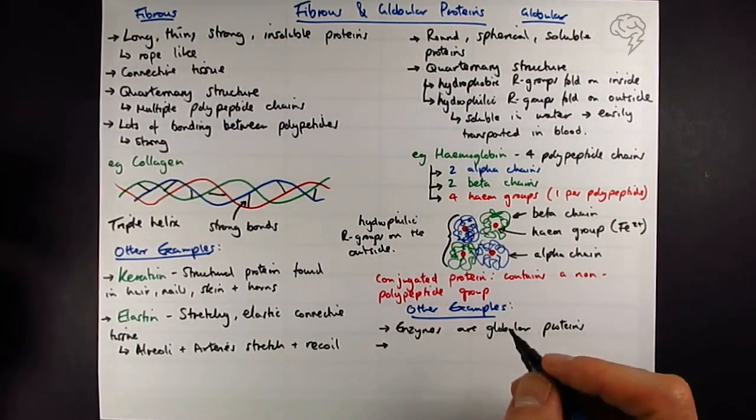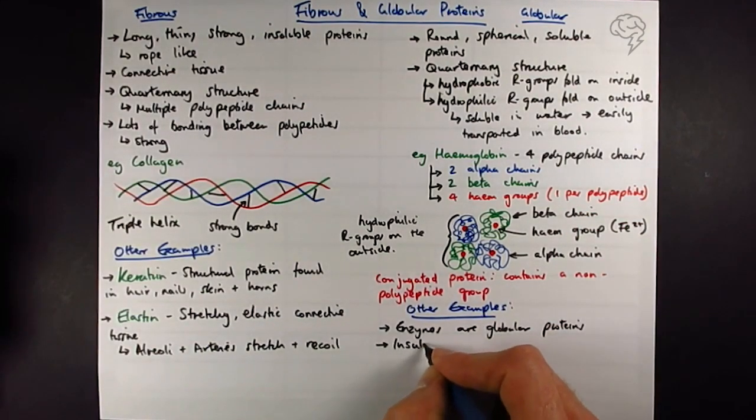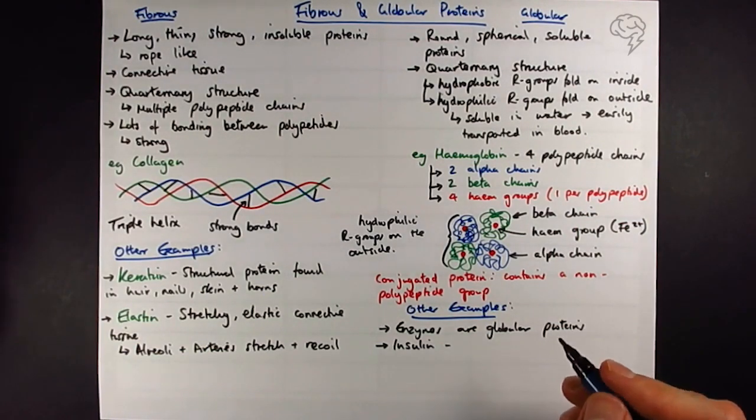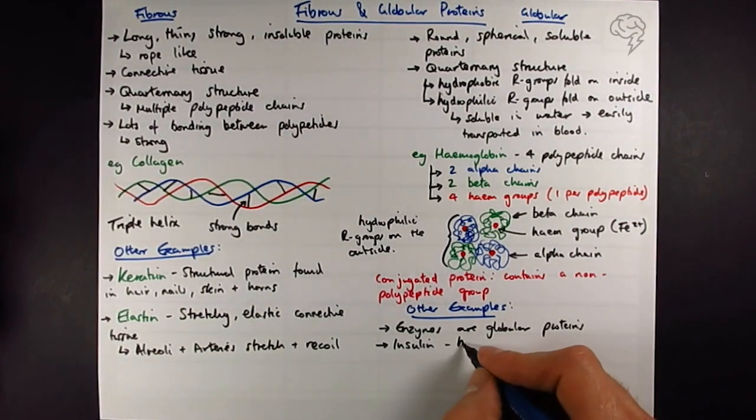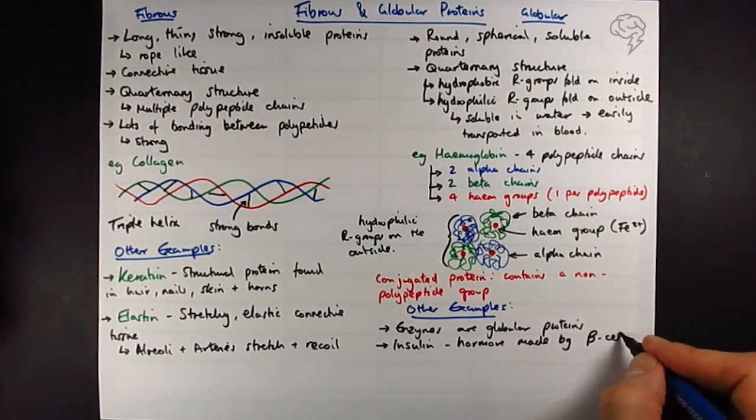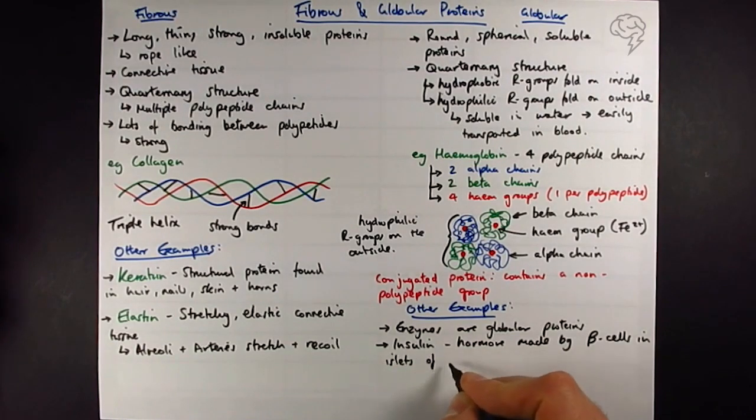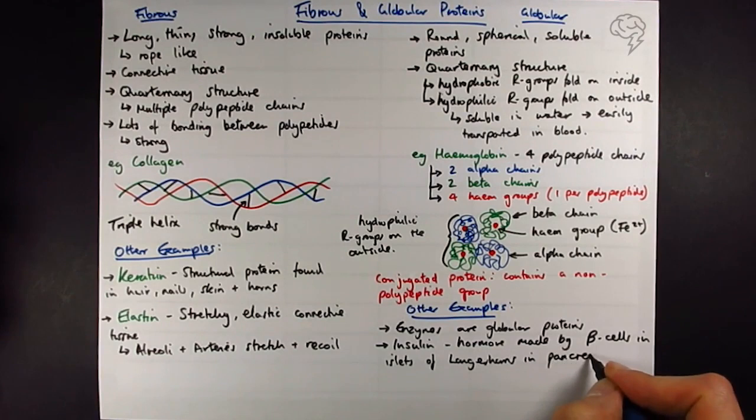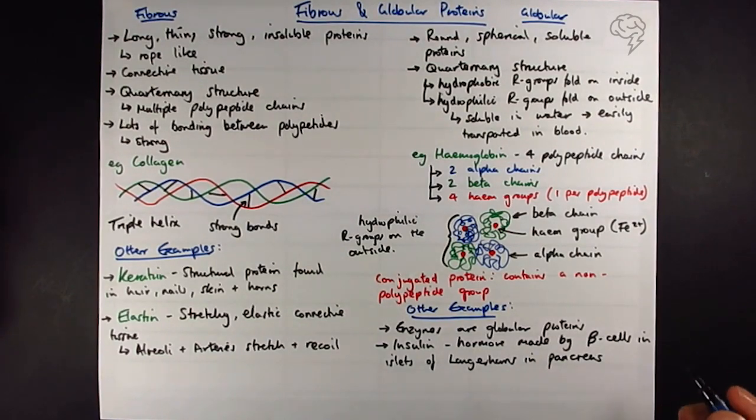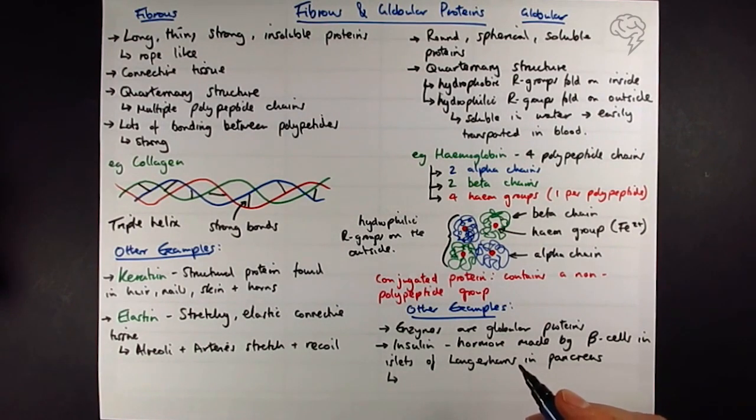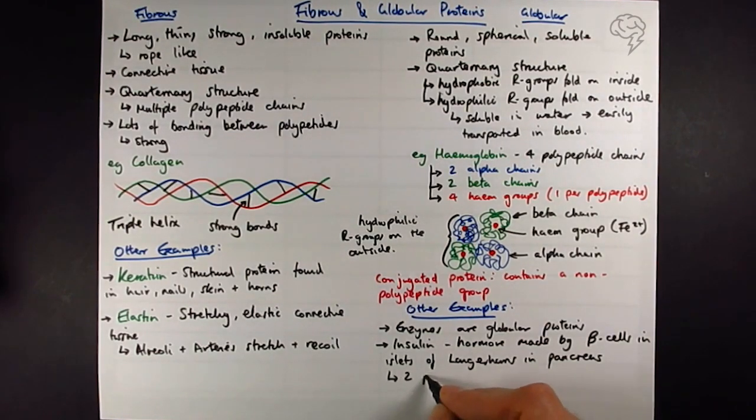The last bit we need to know about is insulin. Insulin is a hormone made by the beta cells in the islets of Langerhans in the pancreas. There's a full lesson on that. What you need to know is that it's two polypeptide chains joined by a single disulfide bridge.